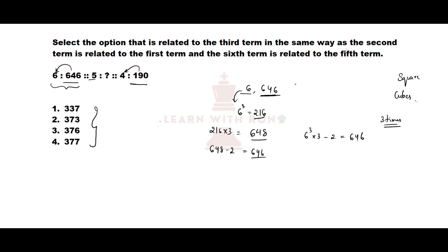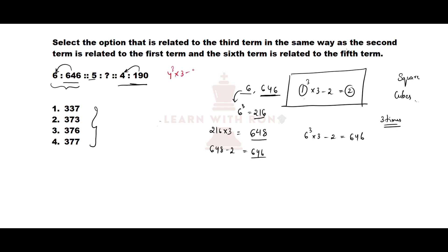The pattern is: first number cubed multiplied with 3, subtract 2, we get the second number. Let us verify this pattern for 4 and 190. Here the first number is 4, so 4 cubed multiplied with 3 minus 2. 4 cubed is 64, multiplied with 3 minus 2: 192 minus 2 equals 190.